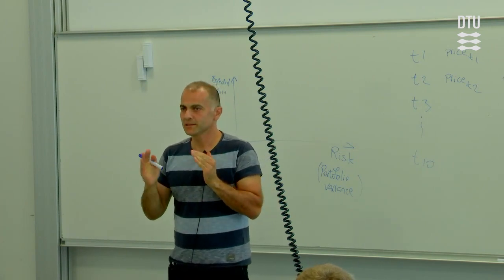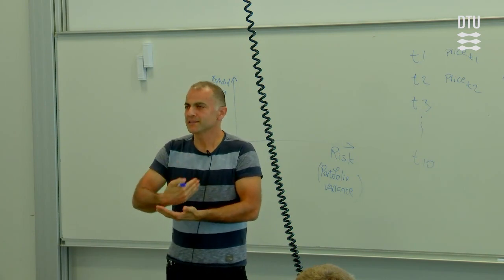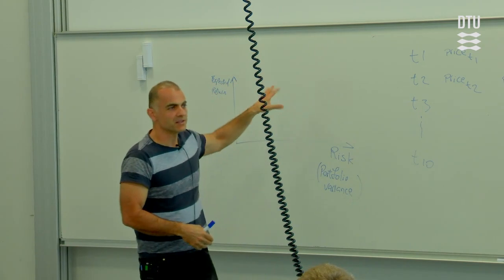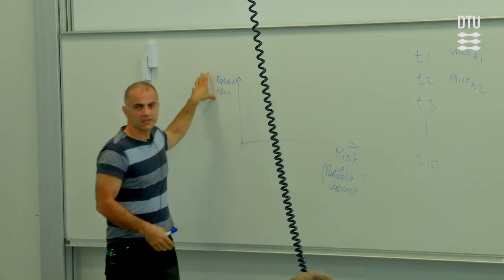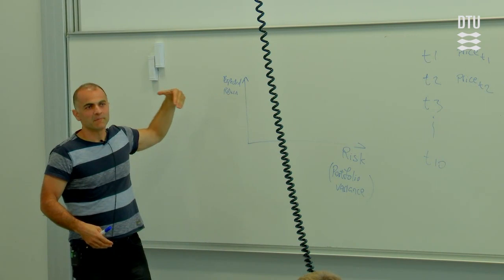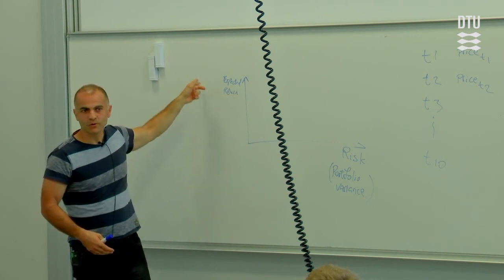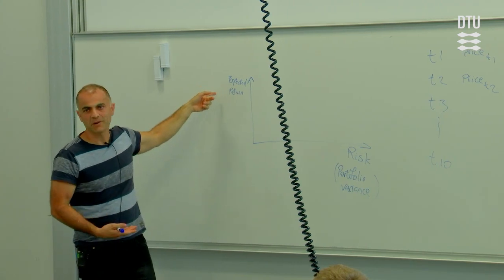So the blowing of the wind is an exogenous variable to your model. Whereas the prices in financial markets are endogenous to your models. So that's why it's kind of a contradiction in term to have a good model, which could always guess the future expected returns.